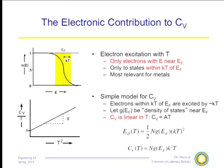Let g(E_F) be the density of states near E_F — the number of energy states right at the Fermi level. Then the thermal energy of the electrons is (1/2) g(E_F) · kT², and differentiating gives a C_v that is linear in T. This is small because g(E_F) is not large — only a few electrons are right at the Fermi level. At normal temperatures the electronic contribution to the specific heat is negligible. But at very low temperature the vibrational specific heat goes as T³ while the electronic specific heat goes as T, so there is always some temperature low enough that the electronic term dominates.